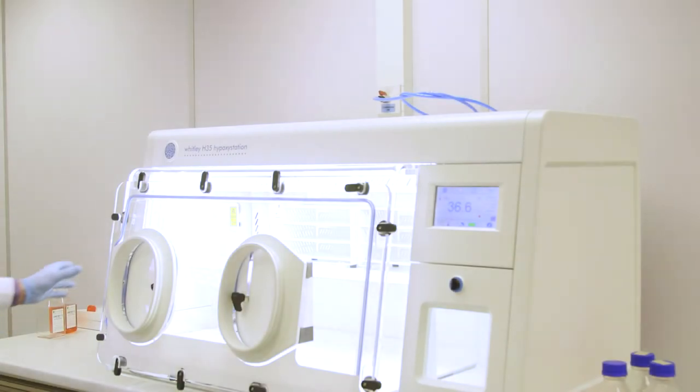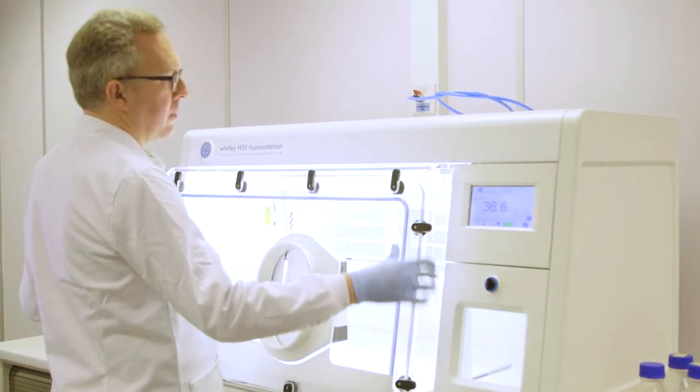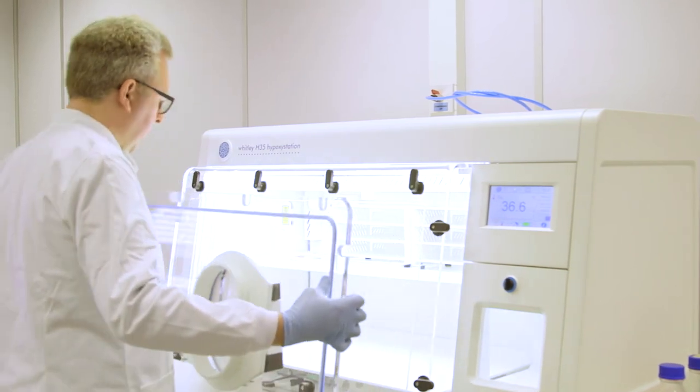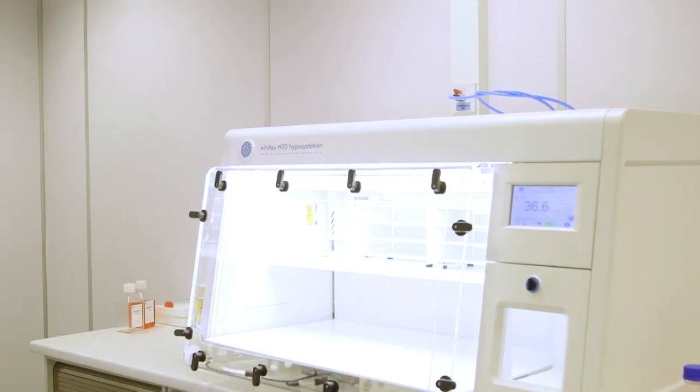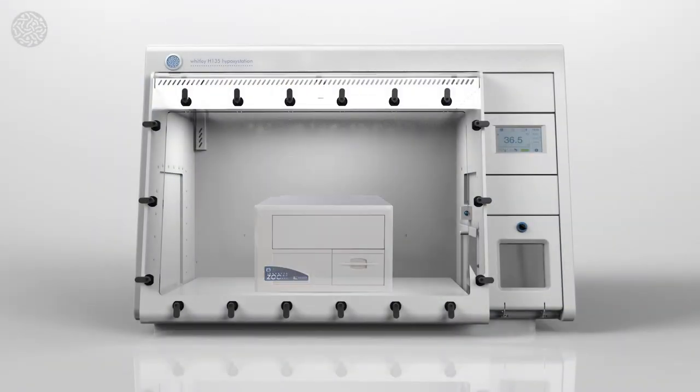The option of a removable front provides the ability to deep clean the interior of the hypoxic station. The front can be easily removed in seconds and provides the capacity to place instruments such as microscopes and plate readers into the chamber.